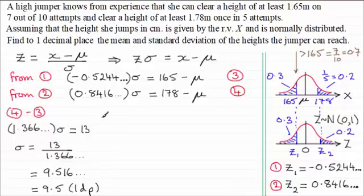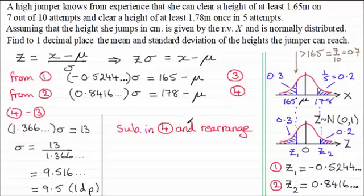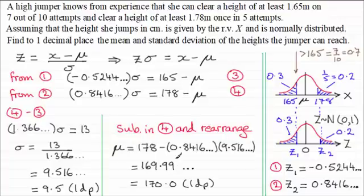Now all we need to do is just calculate the mean mu. And to do that, all I've got to do is substitute back our value for sigma. I'll take the unrounded version, 9.516 and so on, substitute that back into either equation 3 or 4. Again, that's up to you. Now what I'm going to do though, is substitute my results into equation 4. And if I rearrange it by adding mu to both sides and subtracting 0.8416 sigma from both sides, then this is the result that I get. I get that the mean turns out to be 170.0 to one decimal place.